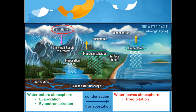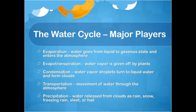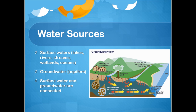Groundwater discharge and streamflow can be either inflow or outflow, depending on whether more water is entering or leaving the system. Evaporation occurs when water goes from liquid to gaseous state and enters the atmosphere. Evapotranspiration is similar, but the water vapor is given off by plants. Condensation occurs after water vapor enters the atmosphere — the water vapor droplets turn to liquid water and form clouds. Transportation describes the movement of water through the atmosphere, and precipitation occurs when water is released from the clouds. Water entering the system as precipitation ends up in surface waters like lakes, rivers, streams, wetlands, or the ocean, or in groundwater. Surface water and groundwater are treated as two separate entities in the water budget, but it's important to remember that they are connected.